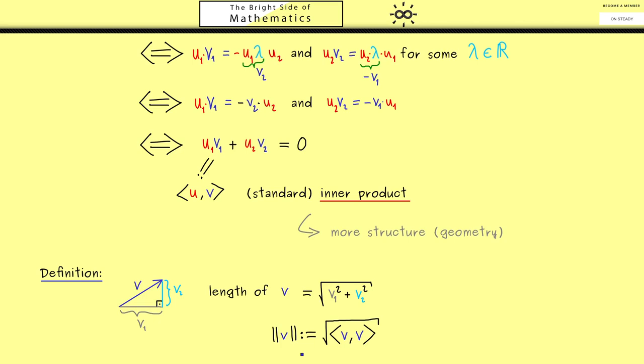And there we usually use two lines around the vector v. Also here to be precise we would say this is the standard norm on R2. Moreover you also often see the name Euclidean norm for this definition. And now you should remember a norm just lets us measure lengths for vectors.